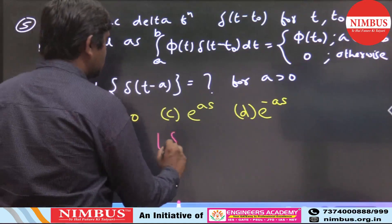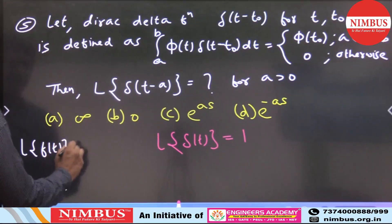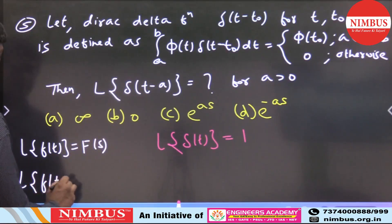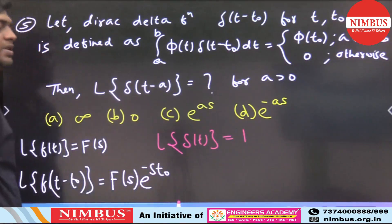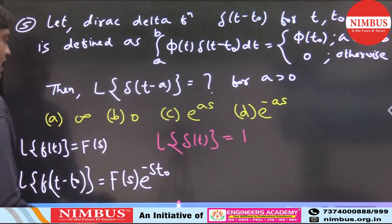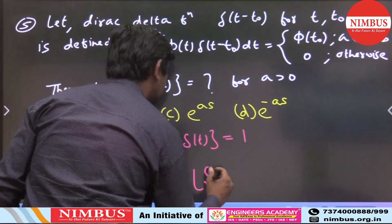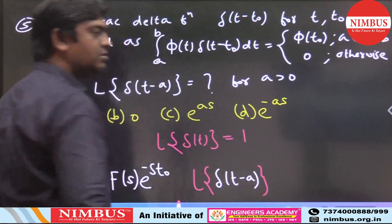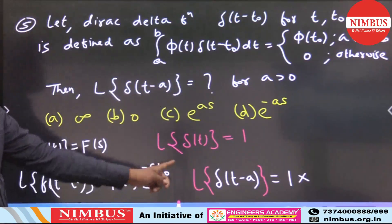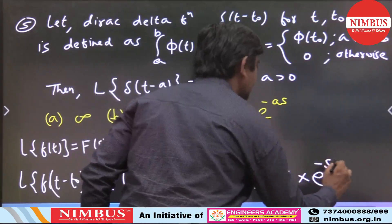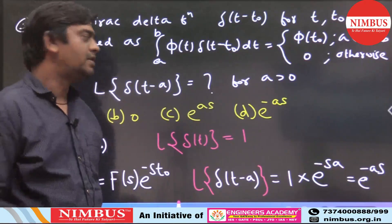We need the Laplace transform of δ(t - a) where a > 0. Using the property, the Laplace transform of δ(t - t₀) is e^(-s·t₀). So the Laplace transform of δ(t - a) is e^(-as). The answer is option D: e^(-as).